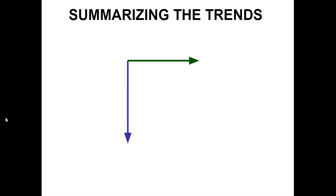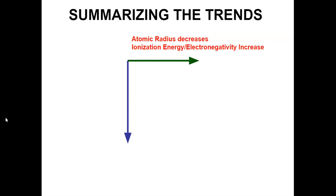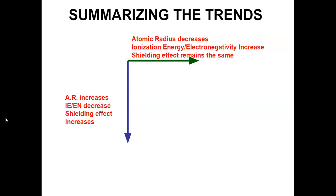Let's summarize these trends. As I go across a period, atomic radius decreases, while ionization energy and electronegativity increase, and shielding remains the same because the number of occupied energy levels doesn't change. As I go down a group, atomic radius increases, ionization energy and electronegativity decrease, and shielding increases.